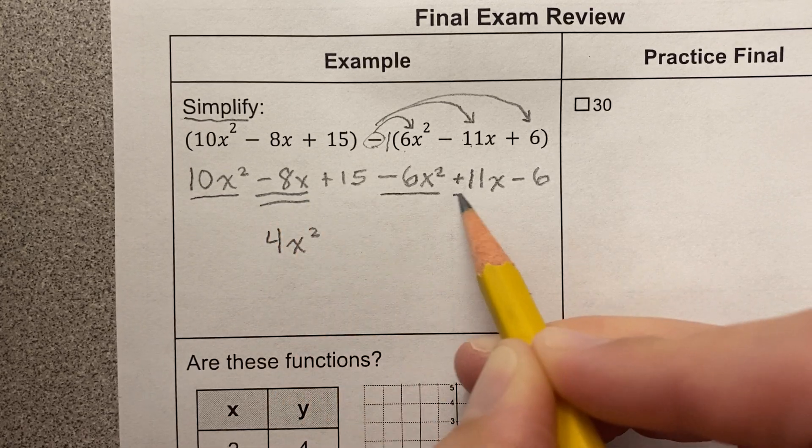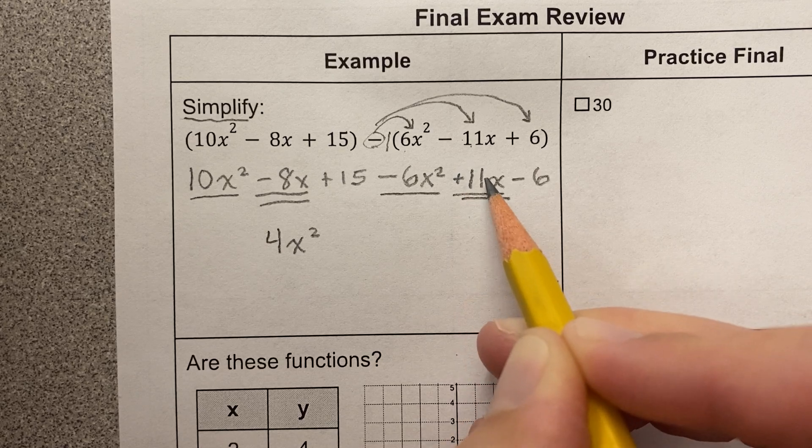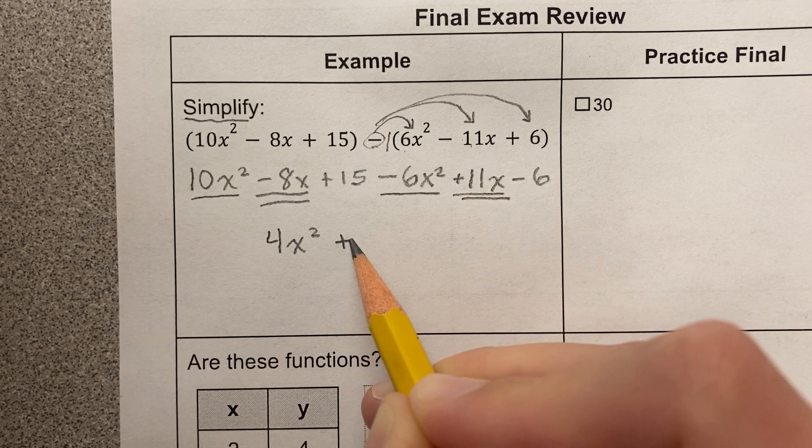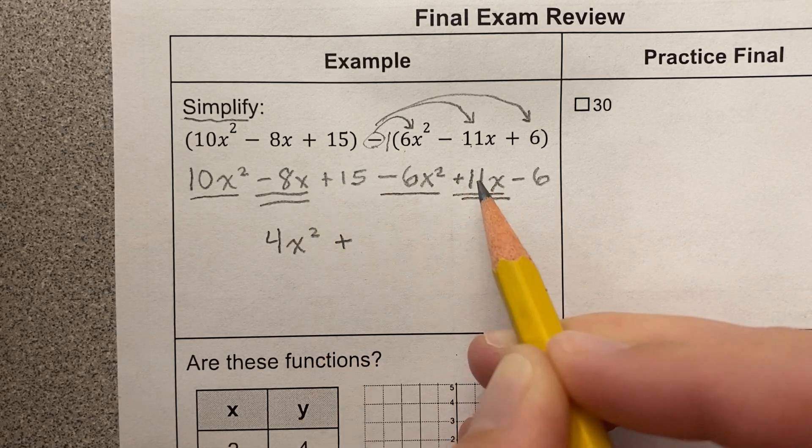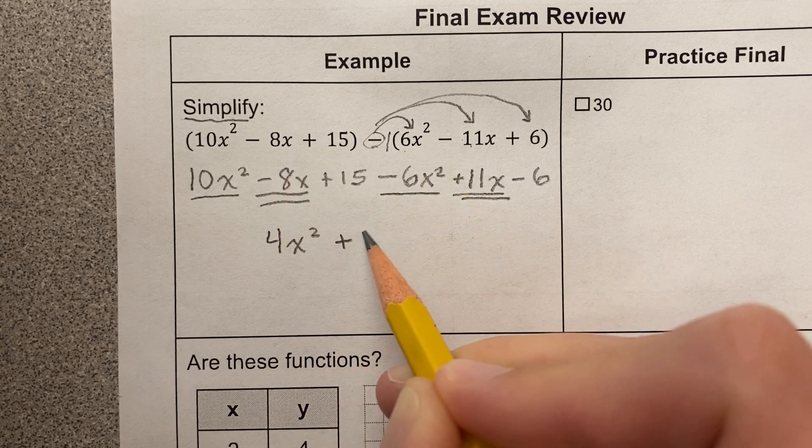Then I'm going to combine these like terms, that's negative 8 plus 11. In this case, I have more positives than negatives, and this is basically the same as 11 minus 8.